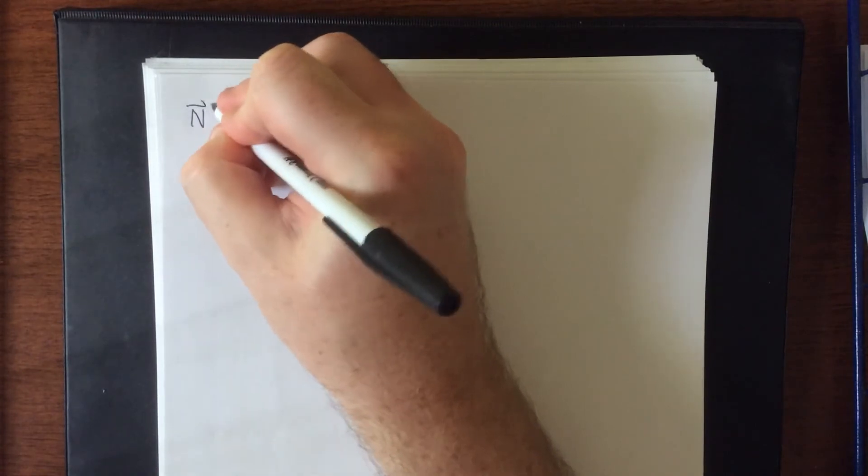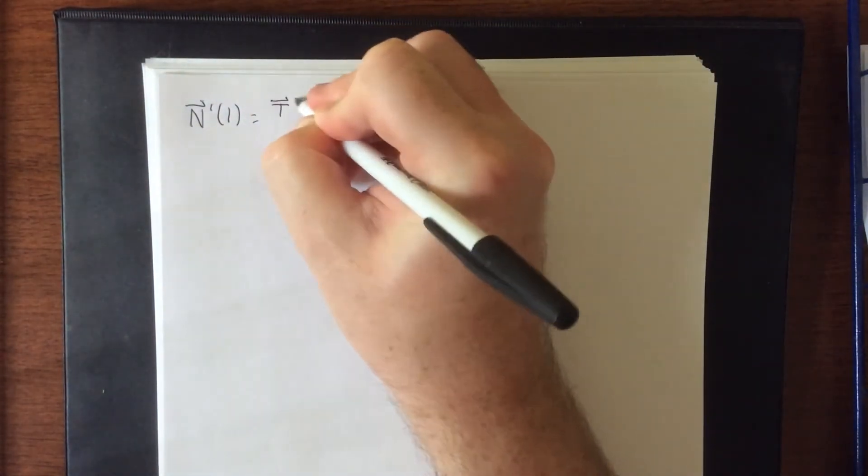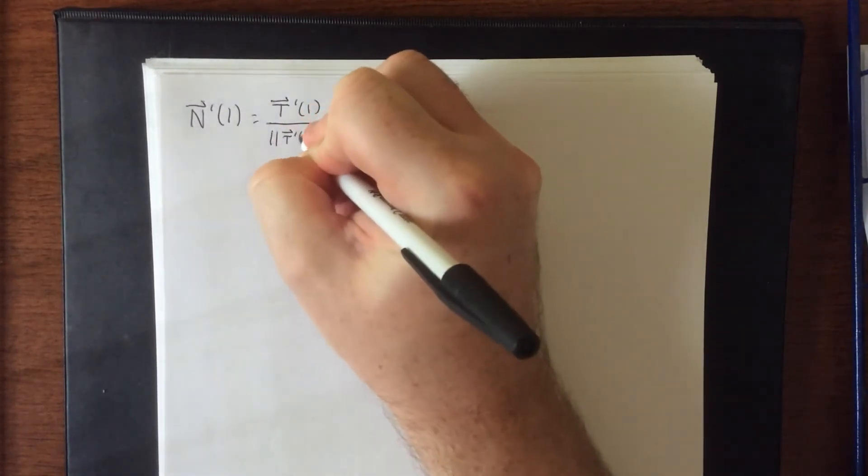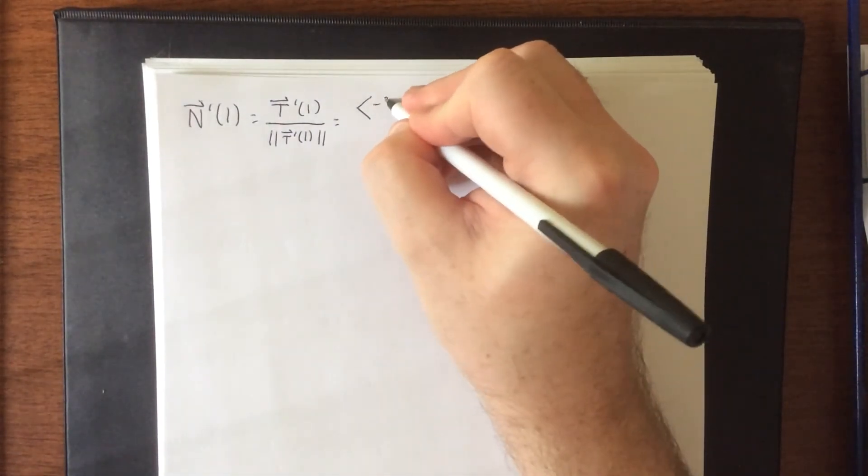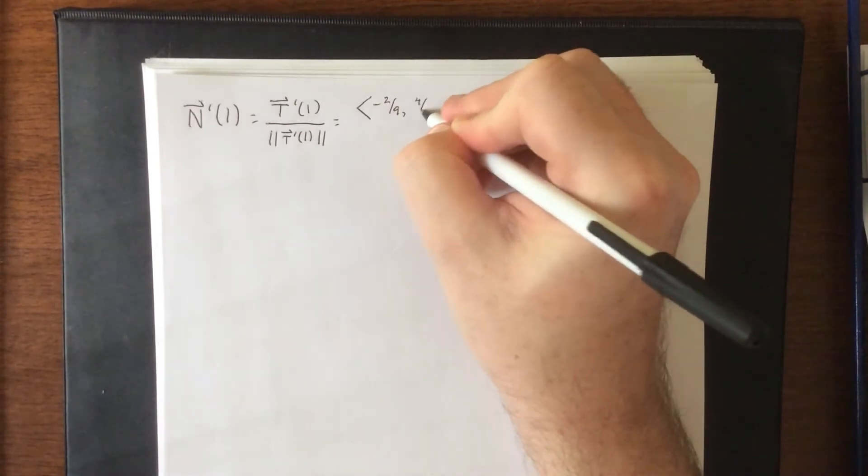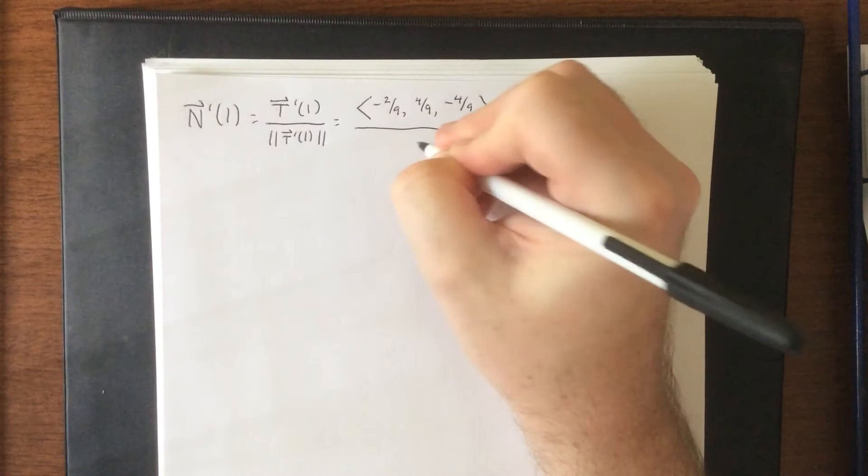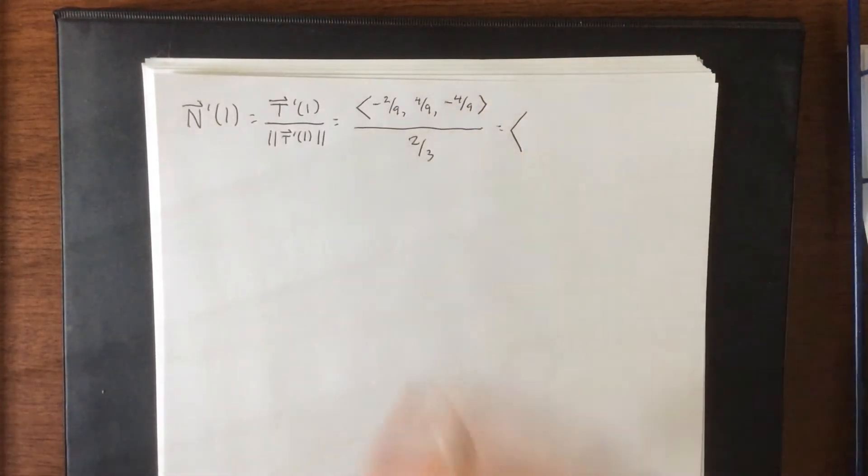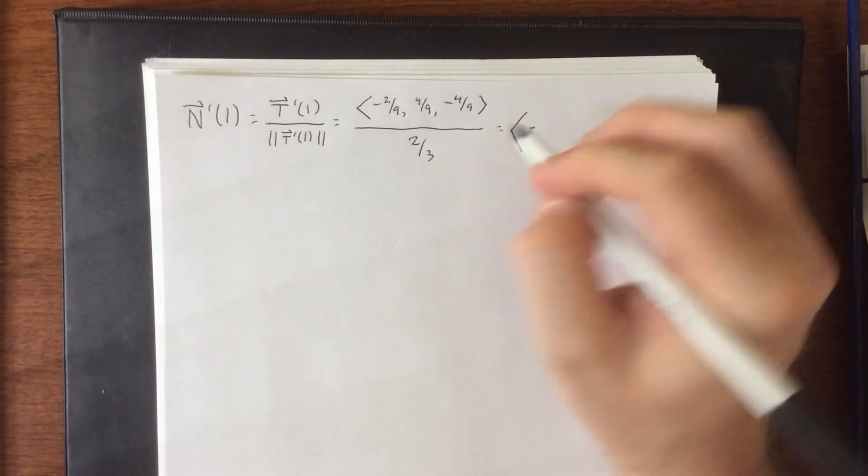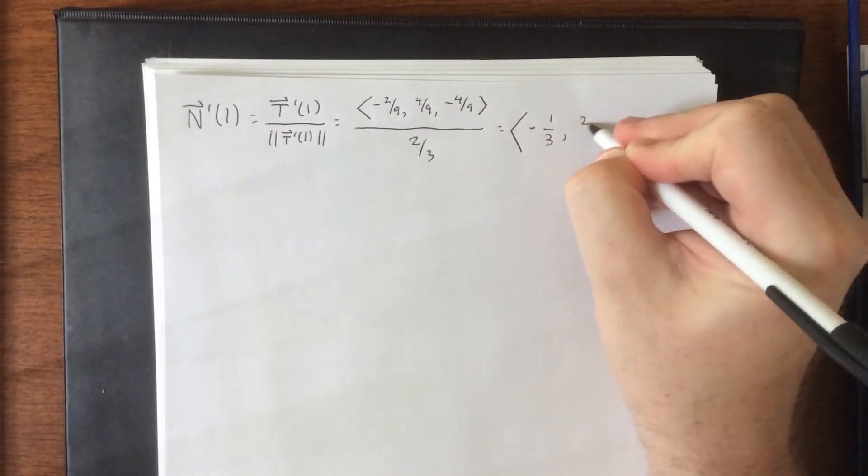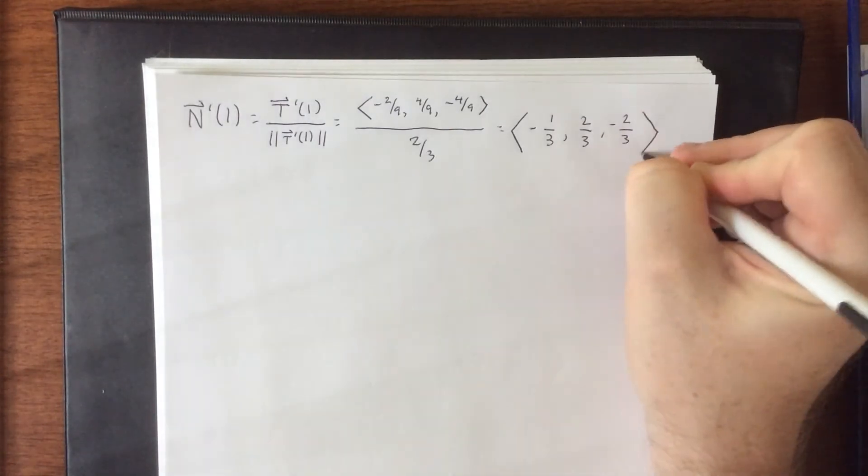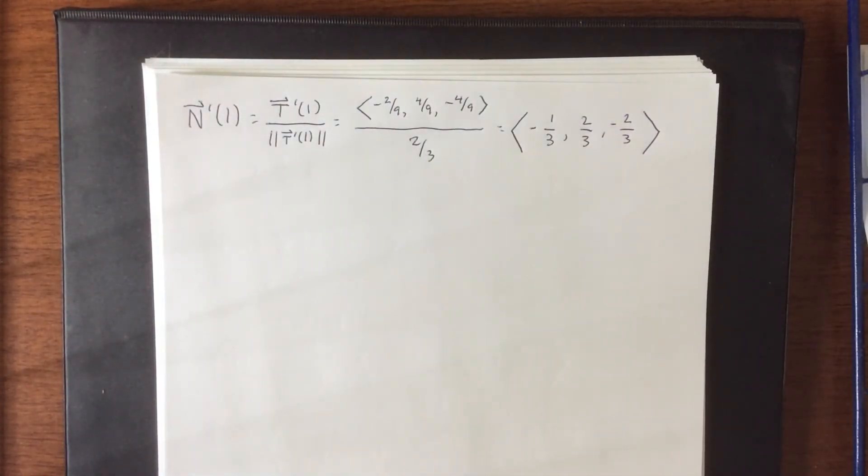So, the normal vector, unit normal vector evaluated at 1, that's going to be T prime of 1 divided by the magnitude of T prime of 1. So, T prime of 1, grabbing this from the previous page, is negative 2 ninths, 4 ninths, negative 4 ninths, and we're going to divide that whole thing by 2 thirds. Now, do bear in mind that dividing by 2 thirds is the same as saying multiply by 3 halves, so I'm going to multiply all three of these fractions by 3 halves. 2's will cancel, the denominator reduces, that will be negative 1 third, 2 thirds, and then negative 2 thirds. So, very similar in structure to T of 1, in the sense that we've got 1's and 2's in the numerator, and 3's in the denominator.